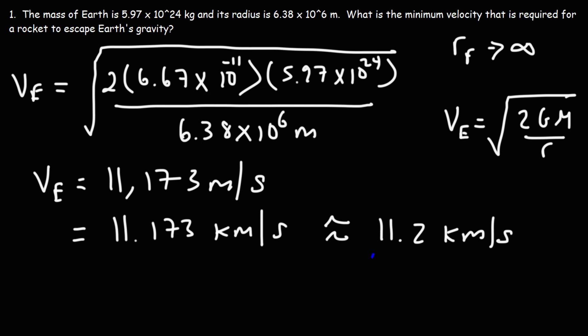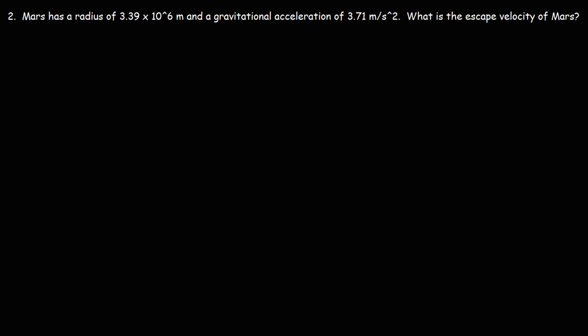So that is Earth's escape velocity. If an object leaves the ground at that speed, and you ignore the effects of air resistance, that object can escape Earth's gravity. Now let's try a similar but slightly different problem. Mars has a radius of 3.39 × 10⁶ meters and a gravitational acceleration of 3.71 meters per second squared. What is the escape velocity of Mars?